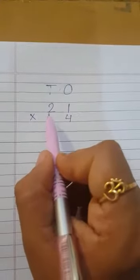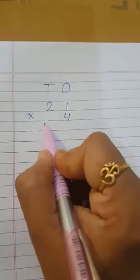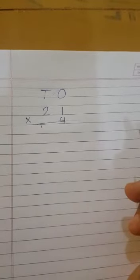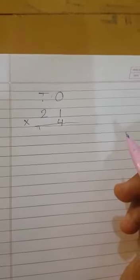We have to multiply 21 into 4. But how will I find it? Do I need to write the table of 21? No, because we have already learnt the tables till 10 and we know the table of 4.